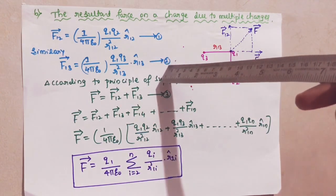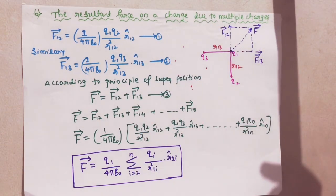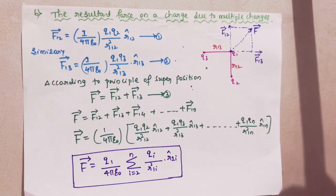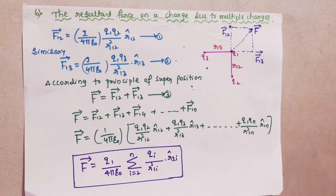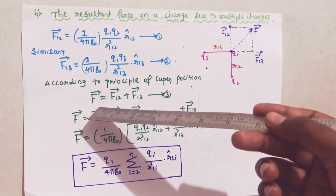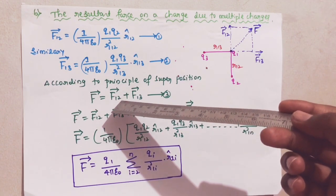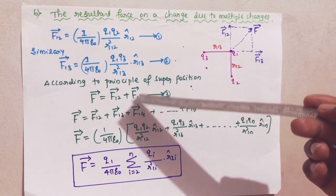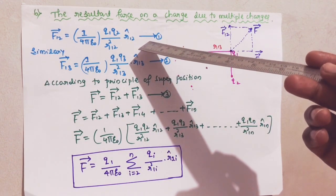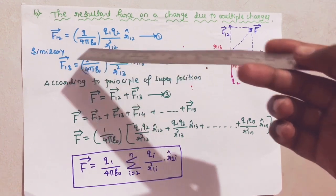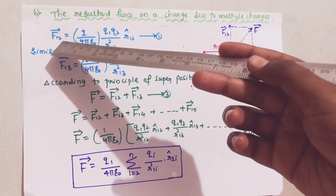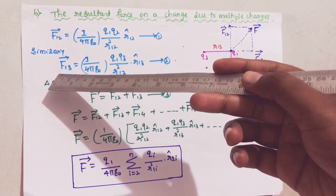Like this we have to find n number of charges and n number of forces — the resultant force on multiple charges. According to the principle of superposition, the resultant force on q1 due to the charges q2 and q3 gives this equation. Vector f equals force acting on charge q1 due to q2, plus force acting on charge q1 due to q3. Here f12 means force on q1 due to q2, and f13 means force on q1 due to q3.